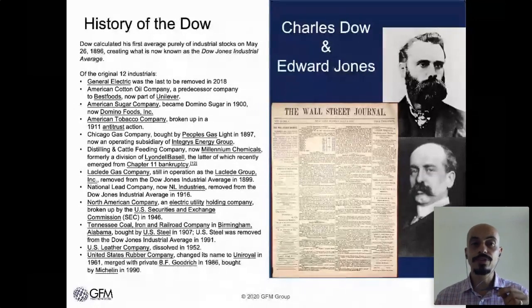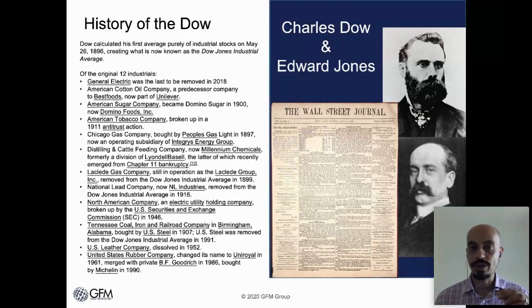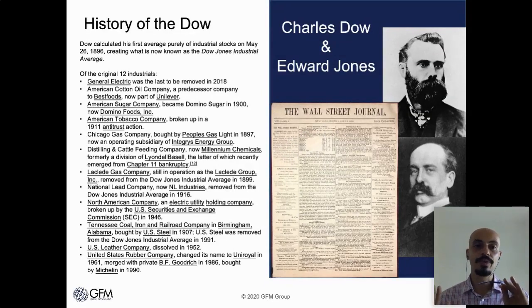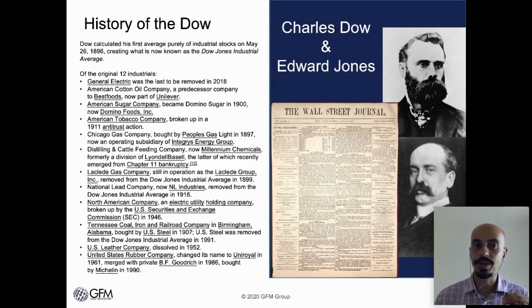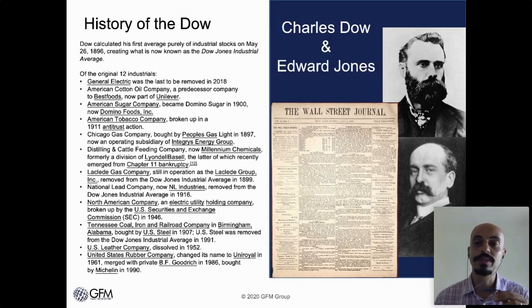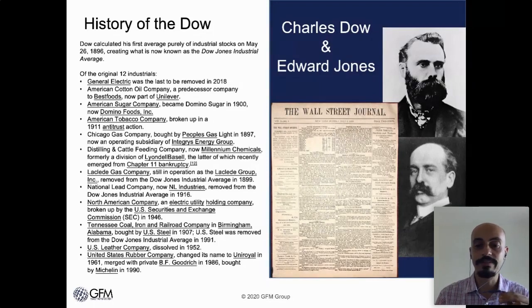Of the original 12, General Electric was the longest lasting and was only removed in 2018. So none of the current 30 companies were in the original Dow Jones Industrial Average. You will see on this list what happened to the other 11 companies, such as American Cotton Oil, American Sugar, and so forth — many of which are companies you have probably never heard of. The story of what happened to them is quite a fascinating piece of financial history.